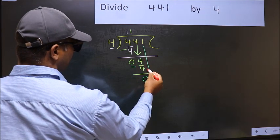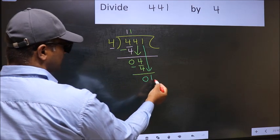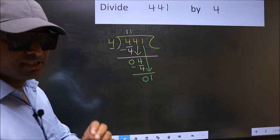After this, bring down the beside number. So, 1 down. After this step, the mistake happens. And the mistake is this.